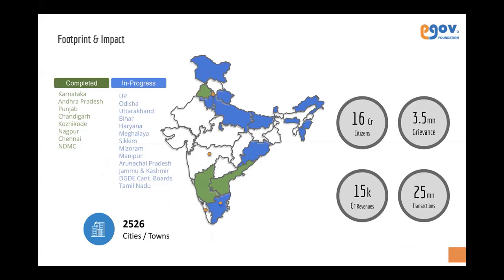Digit is our open source platform which works on urban governance. This gives you a snapshot of the states in India that have already implemented Digit or are under implementation. Most ULBs have already picked up one or another specific module of Digit, and a lot of other states also have the full-stack Digit implementation. By 2024, the Ministry of Housing and Urban Affairs is looking at rolling this out across all states. We currently don't do any implementations ourselves — it's only through partners, which presents a great opportunity for all partners to participate in statewide RFPs.